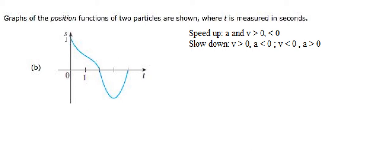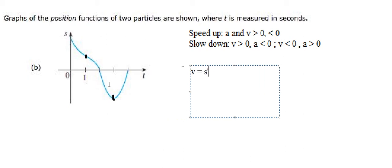We have the position function here. We know that this one has a critical point, and this one has a critical point. We have number one and number three. If we do the first derivative of S, we get V. And if we do the second derivative of S, or the first derivative of V, we get A.